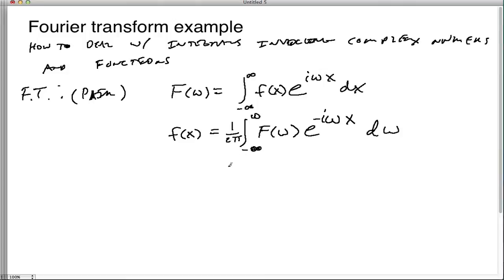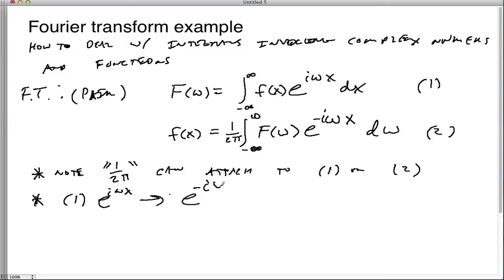This 2 pi factor can actually go, note the 1 over 2 pi can attach to both what I'll call number 1 or 2. And we could also have in 1, i omega x could be negative i omega x, while e to the i omega x could go to e to the i omega x in 2.